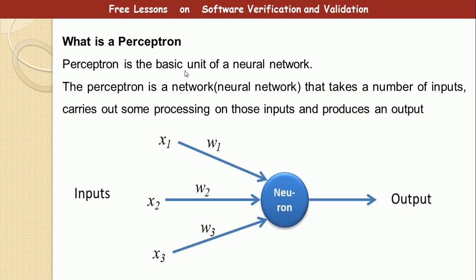A neural network is a network that mimics the behavior of the network in the human brain. If we look at the figure, you see that we have inputs X1, X2 and X3. And we also have W1, W2 and W3. W1, W2 and W3 refer to the weights of the edges. In the case of a perceptron, the edges also have weights or numbers assigned to them. So this is the basic concept of how a perceptron works: take a series of inputs, perform some processing within the neuron, and then produce an output.